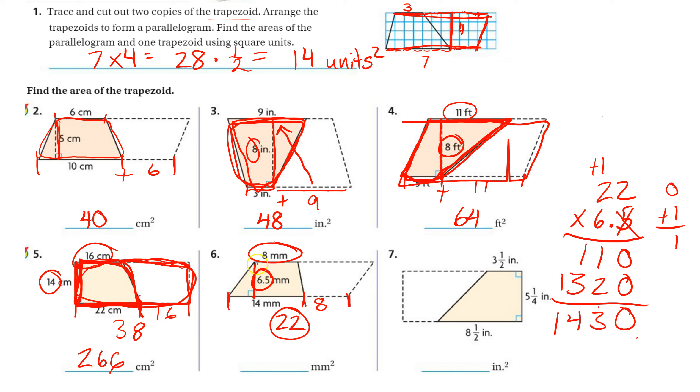And then, again, that's the area of this entire figure, but we want just the area of the trapezoid for our final answer. So we have to take half of this. Half of 1000 is 500, and I'm just showing you another way to do this. Half of 400 is 200, half of 30 is 15. So that's going to be 715 millimeters squared.